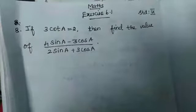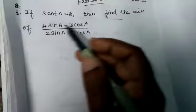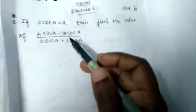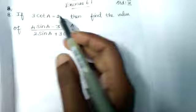Now we are doing exercise 6.1 A. The question is: if 3cotA equals 2, then find the value of 4sinA minus 3cosA divided by 2sinA plus 3cosA. We want to find the value of this expression.